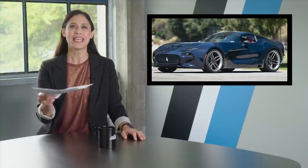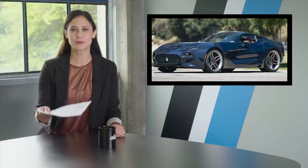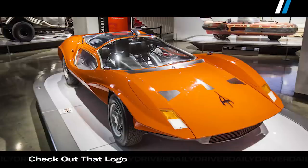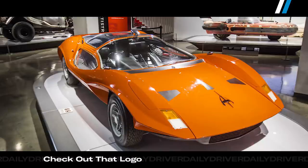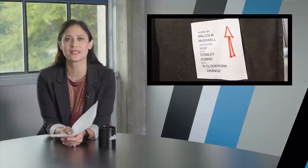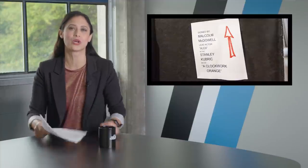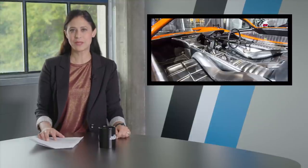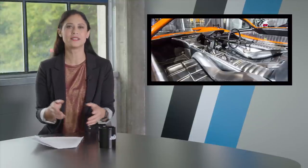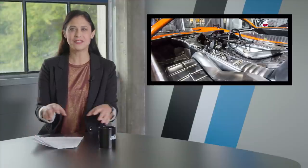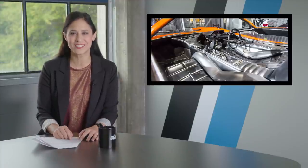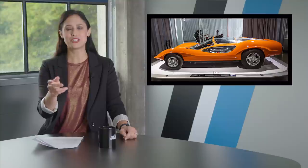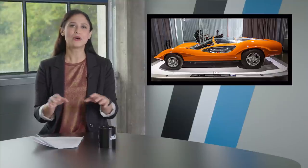Next up is the 1969 M505 Adams Brother Probe 16. Wow, guys, that's quite a name. You actually might recognize this car from the Stanley Kubrick classic, A Clockwork Orange. Now, when brothers Peter and Dennis Adams were hired to design the car, they wanted it to be, quote, an investigation into extremes of styling. Well, guys, mission accomplished. Now, it looks like it could go a million miles per hour, doesn't it?